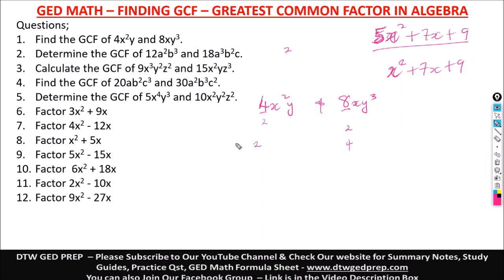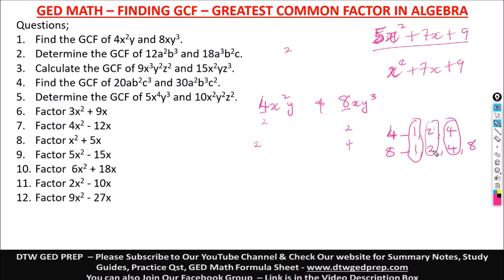Let's list the factors: factors of 4 are 1, 2, and 4; factors of 8 are 1, 2, 4, and 8. The common factors are 1, 2, and 4, but you use the greatest, which is 4. That's why it's called the greatest common factor. So we bring out 4.